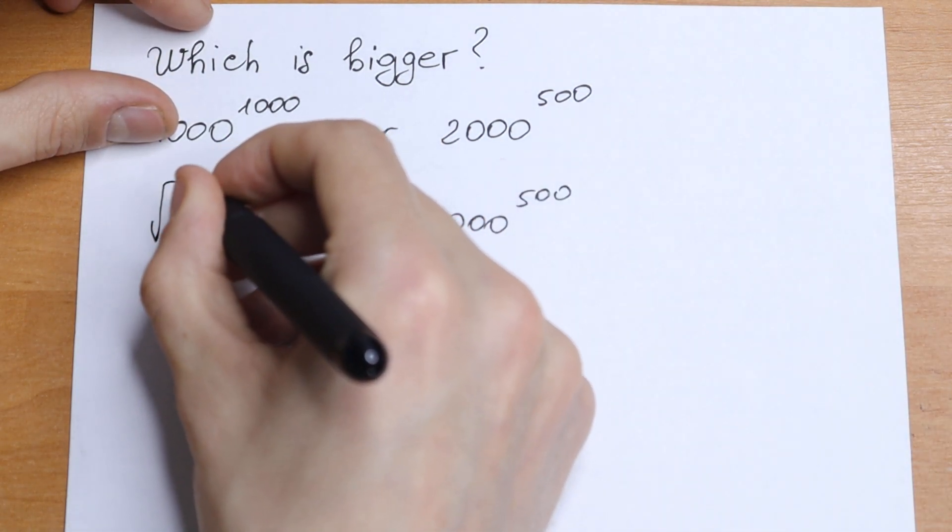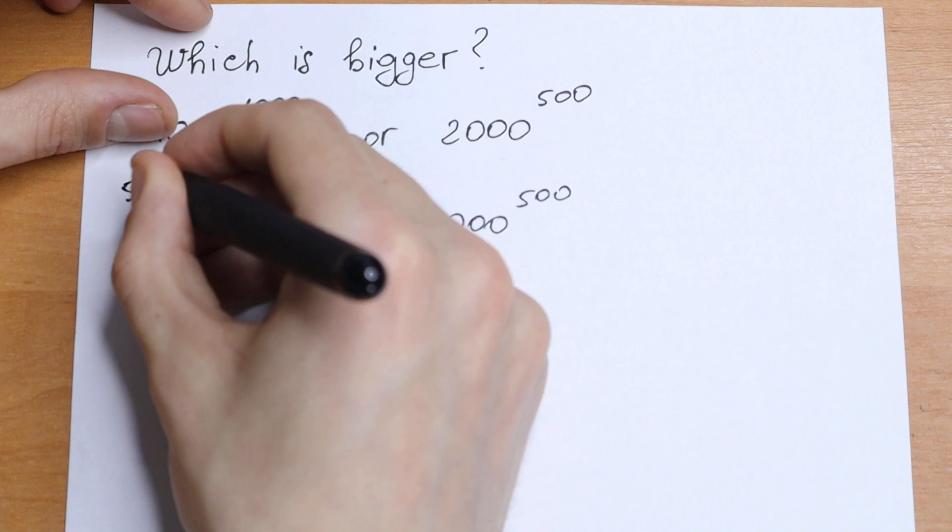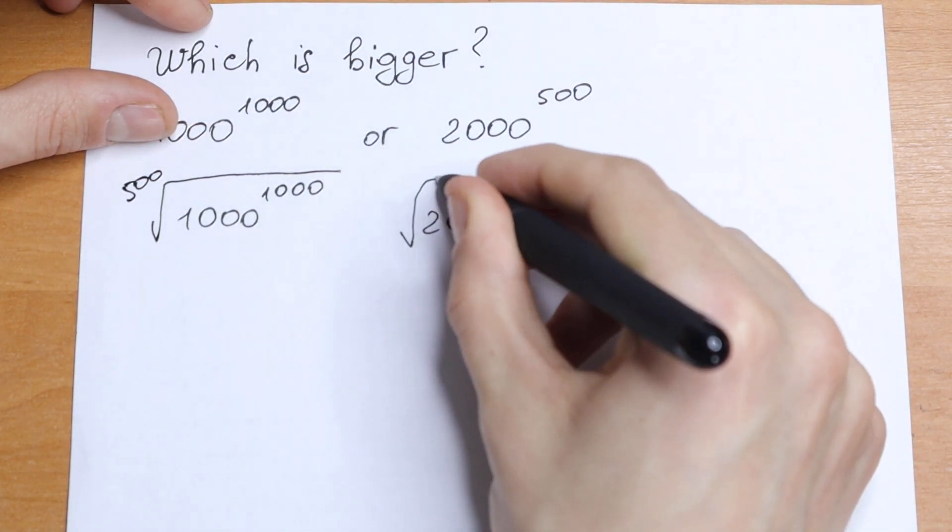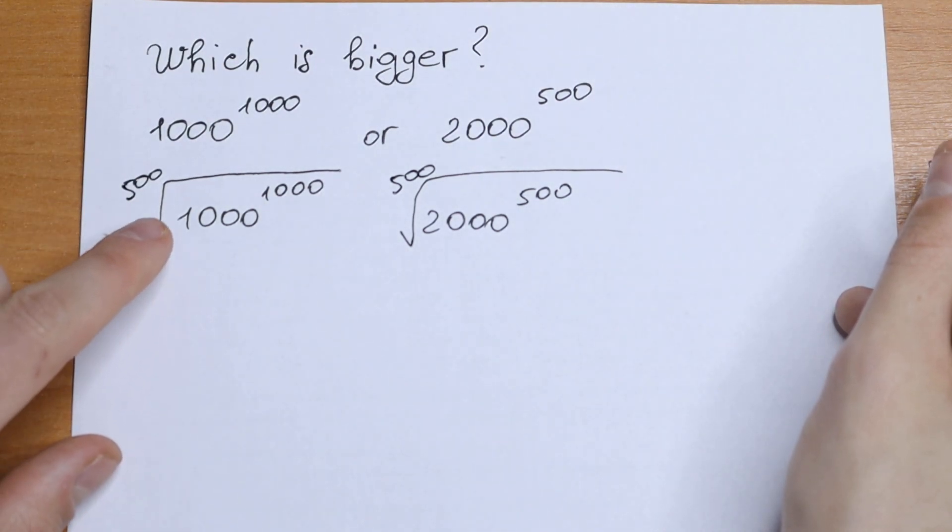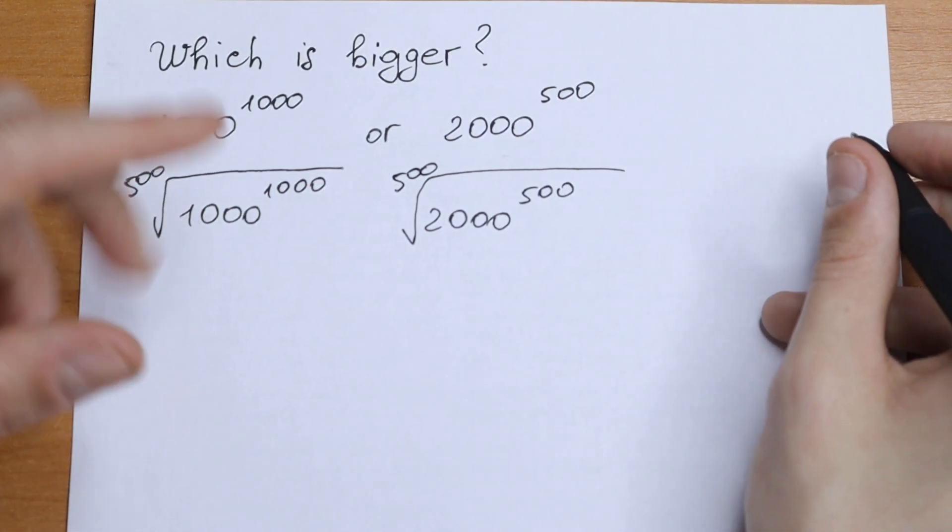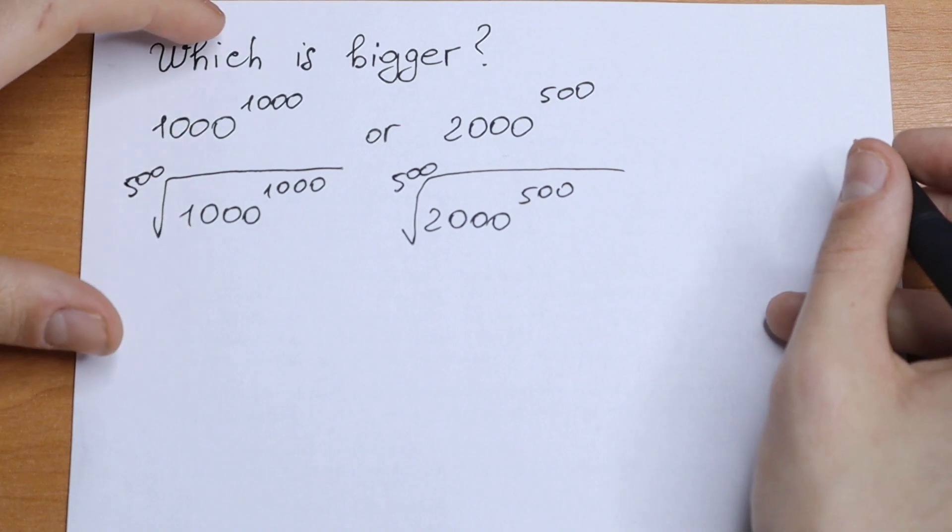What we will have? Let's take right here 500th root, and right here on the right as well 500th root. So we can rewrite these 500th roots using a different way.